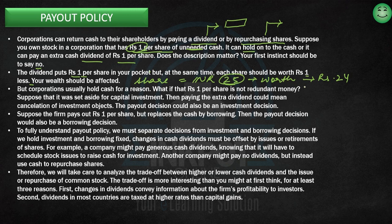Whoever buys that share now will think that the dividend of one rupee has already been received. If I'm buying this share from you today, I'm willing to pay 25 rupees. But if I buy tomorrow, after you've received the one rupee dividend, then that share is worth only 24 rupees to me.